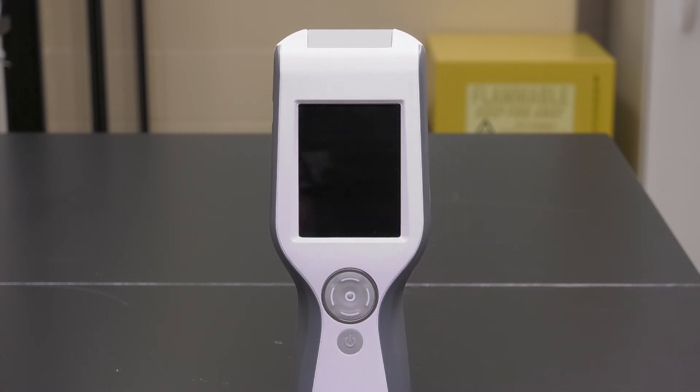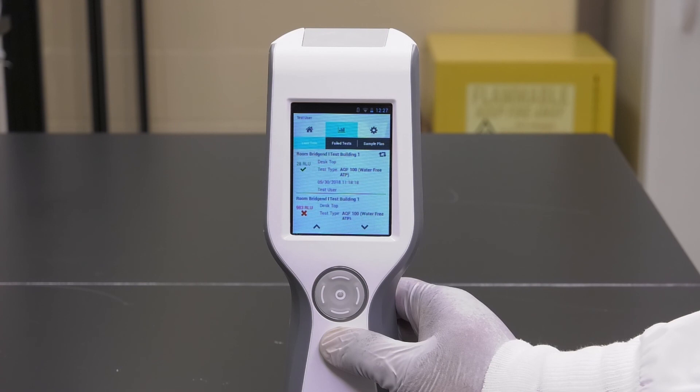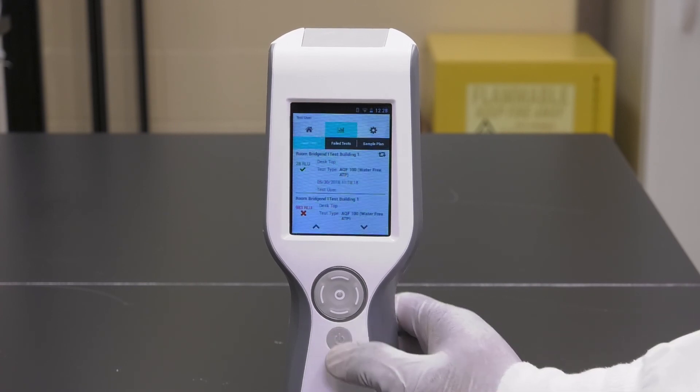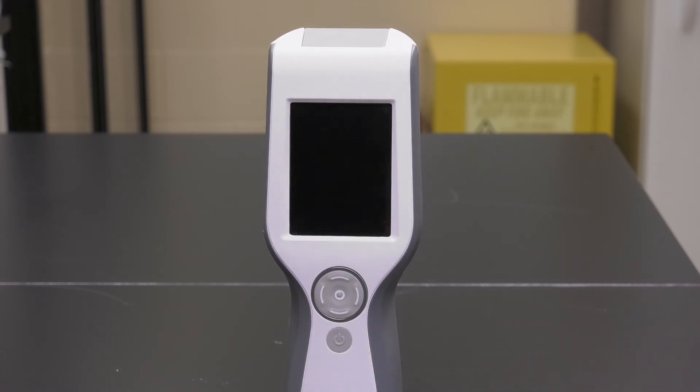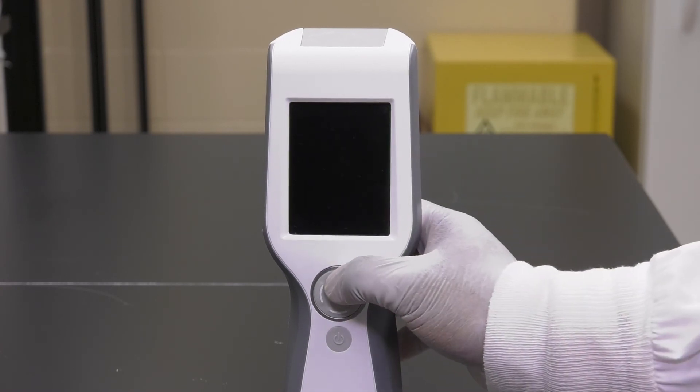To put the luminometer to sleep, press and release the same power-off button quickly, about one second. The screen will go black. To wake it up, press and hold the top cursor button for about 3 seconds.